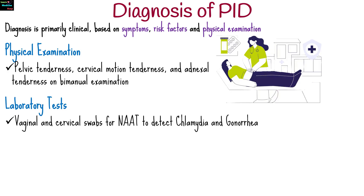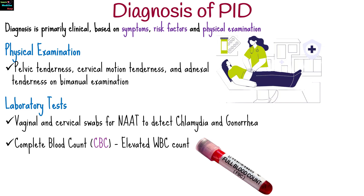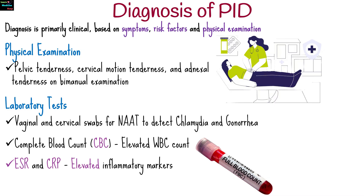Vaginal and cervical swabs for nucleic acid amplification test are used to detect chlamydia and gonorrhea. Complete blood count may reveal elevated WBC count, and ESR and CRP may also be elevated.